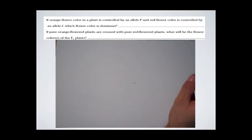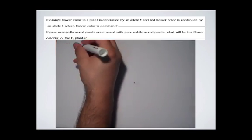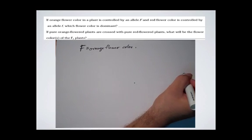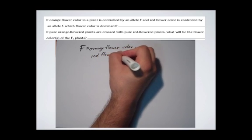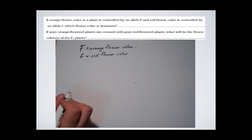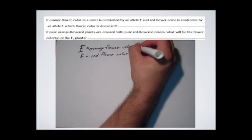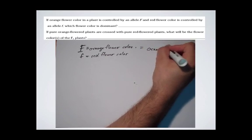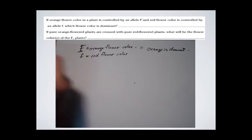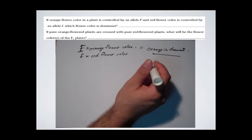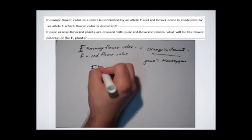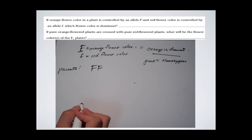The next question asks us: if orange flower color in a plant is controlled by an allele big F, and red flower color is controlled by an allele little f — which flower color is dominant? You guessed it, of course — the capital letter. So that means orange is dominant, because it's controlled by big F. The capital is always dominant. Now it says if pure orange flowered plants — what did pure mean in the last example? Right, it meant homozygous. So pure orange is homozygous. Remember, you always start with the parents. It's a good idea to write these down, then the sex cells, and you should always have the alleles and the genes.